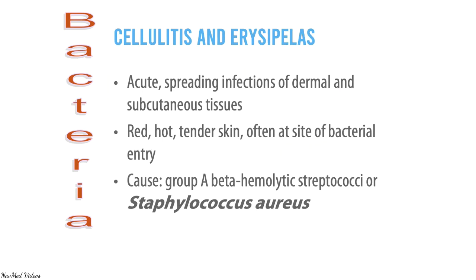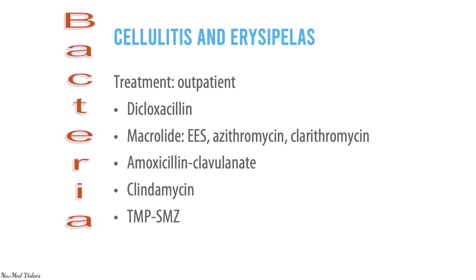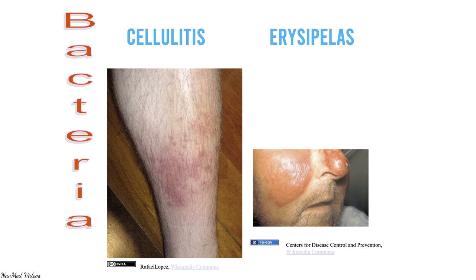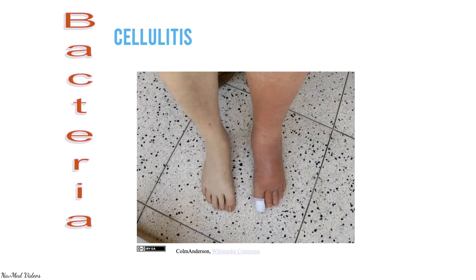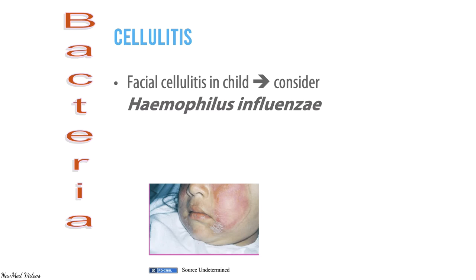Cellulitis and erysipelas are acute spreading infections of the dermal and subcutaneous tissues presenting with red, hot, tender skin. Causes include Group A beta-hemolytic streptococci or Staph aureus. Outpatient treatment includes dicloxacillin, macrolides, amoxicillin, clindamycin, or trimethoprim-sulfamethoxazole. In facial cellulitis in children, consider Haemophilus influenzae.